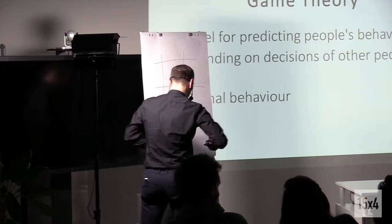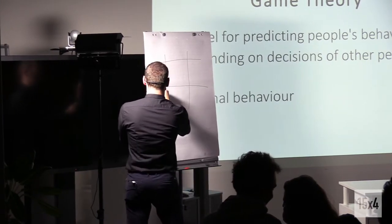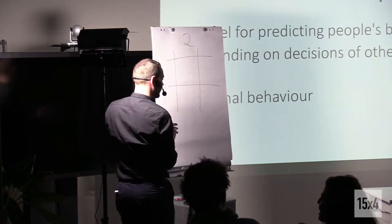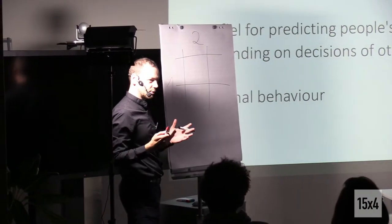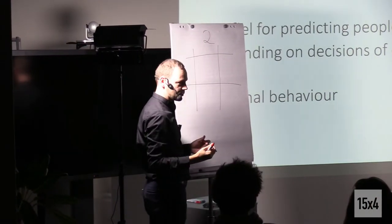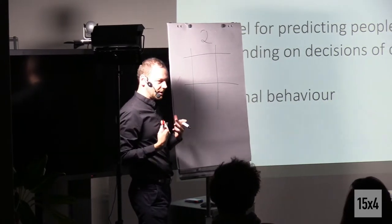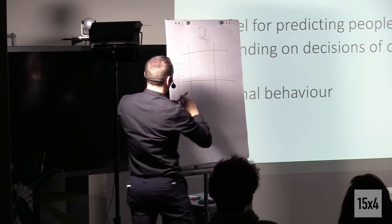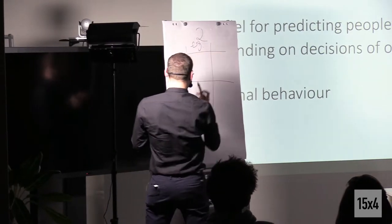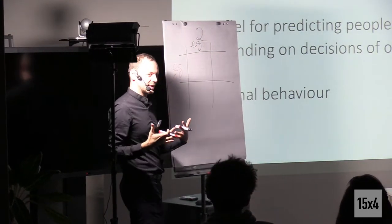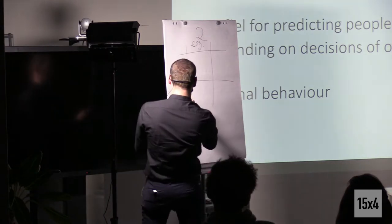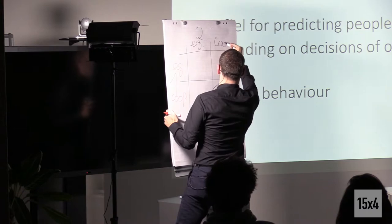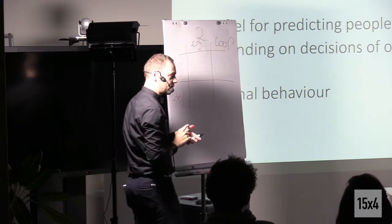All right. So we can express this game in a matrix like this. So we have two players, player number one and player number two, and they have different choices. We call them strategies. So the first strategy is to keep the money. Let's call this an egoistic strategy. And the second strategy is to give the money to the other. So this is the cooperative strategy, like they want to cooperate.